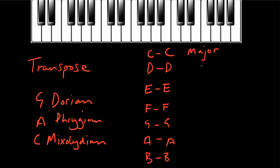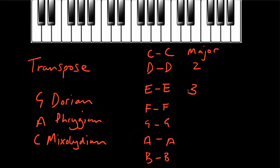The Dorian mode we've learned as a white note scale between D and D, but we could think of it as a C major scale that just starts on the second scale degree. Playing the same notes but starting on the second scale degree gives us our Dorian mode. The Phrygian mode is a major scale starting on the third scale degree. The Lydian mode is like a major scale starting on the fourth scale degree. Mixolydian is the fifth, Aeolian the sixth, and Locrian the seventh.